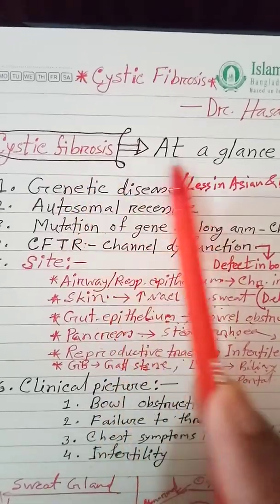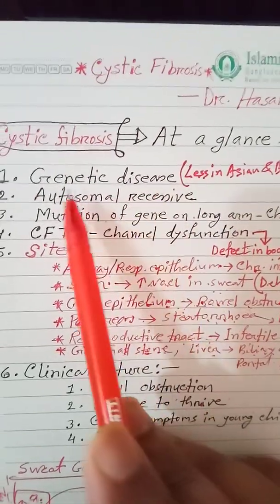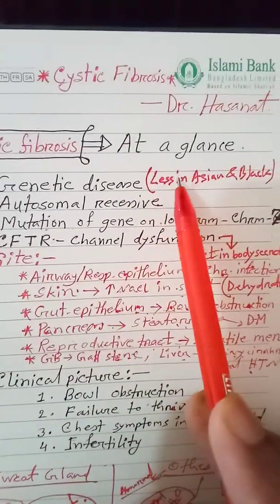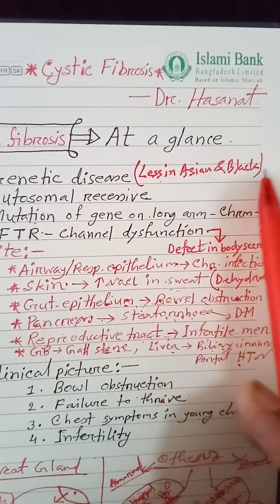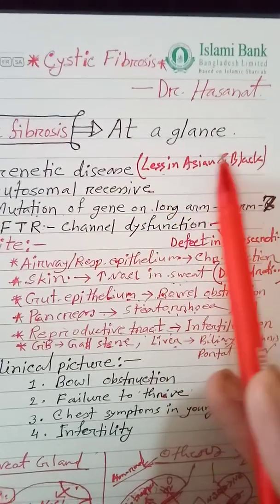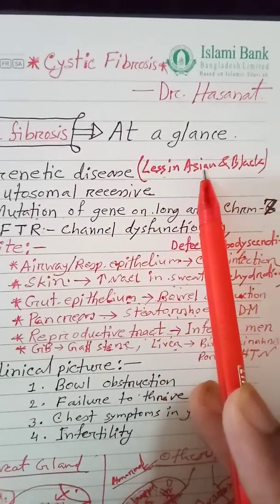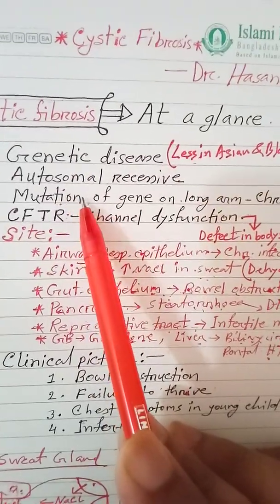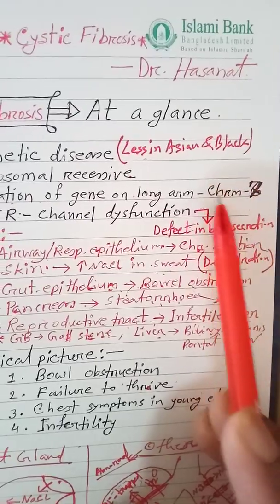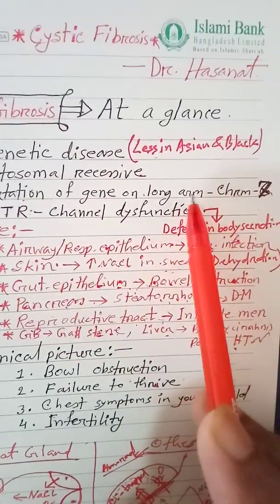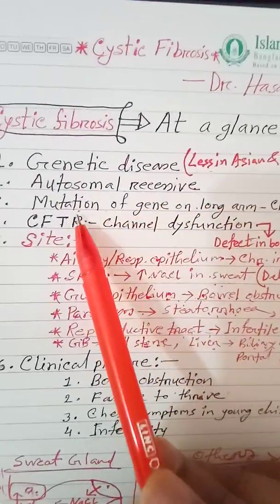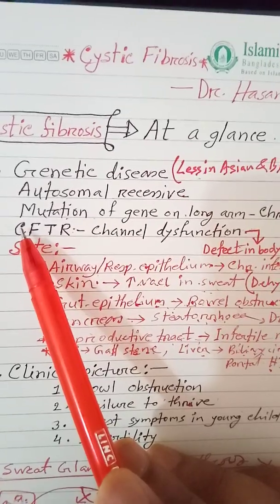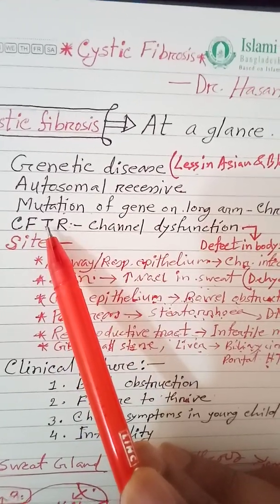Cystic fibrosis is a genetic disease. It is an autosomal recessive disease. It is primarily a Caucasian disease. The gene involved is located on chromosome number 7. The name of the gene is CFTR — cystic fibrosis transmembrane conductance regulator.